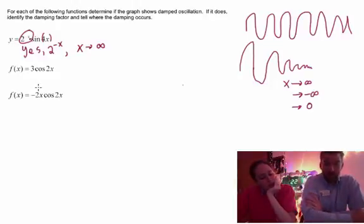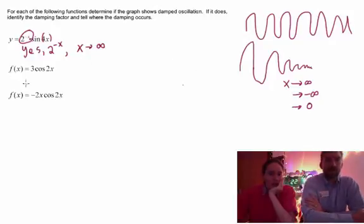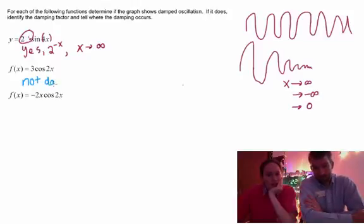Oh look, that's a normal cosine. That's crazy, I don't see any damping, no squeezing. So it is not damped and then we don't have to write anything else. It's just not damped because that's a normal cosine curve.